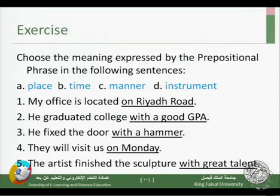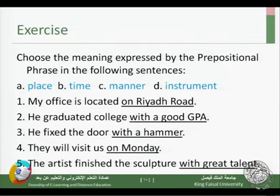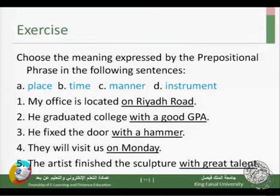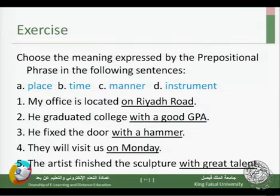Number five: 'The artist finished the sculpture with great talent.' 'With great talent' expresses the manner in which he completed the sculpture — he did it with great talent rather than sloppily. The answer for number five is C, manner.